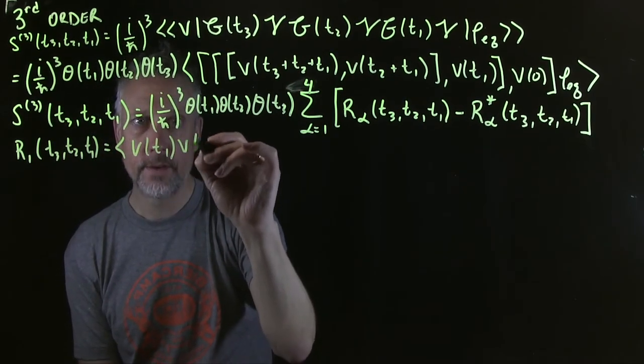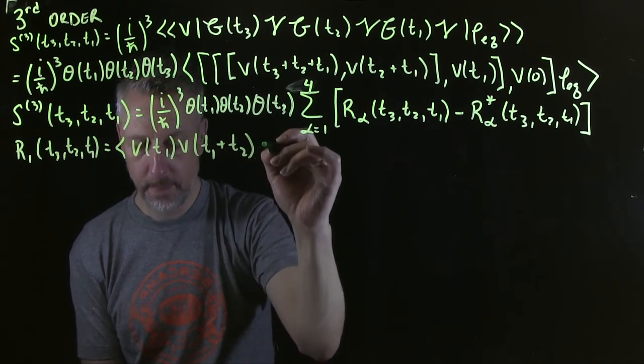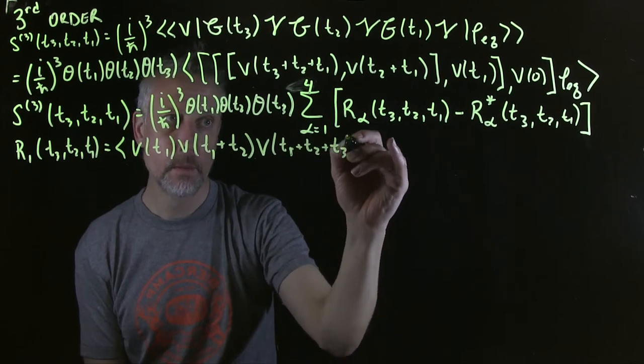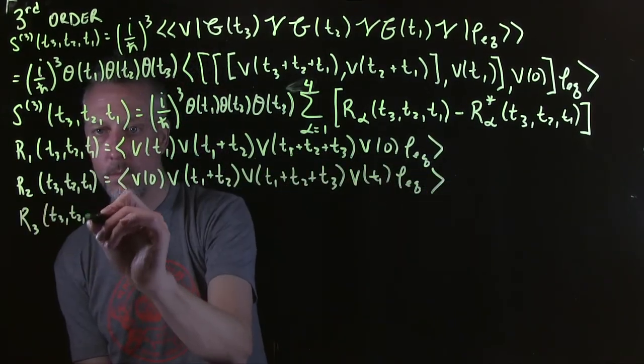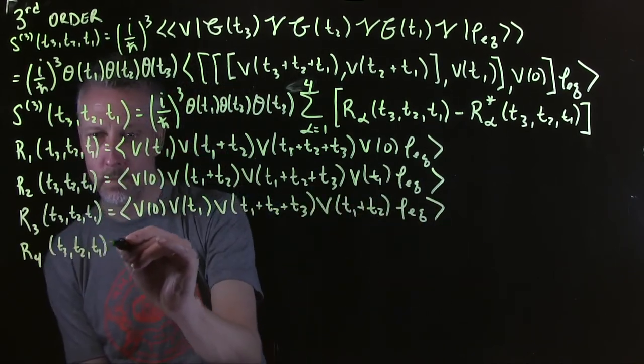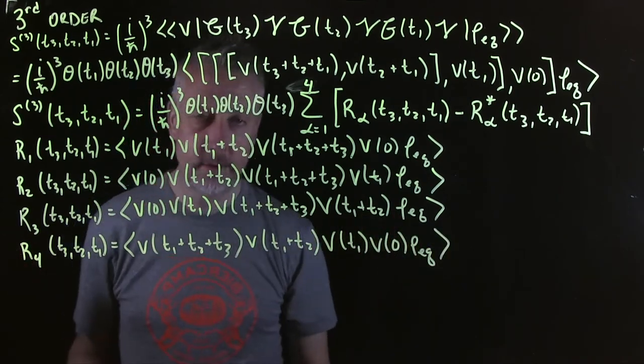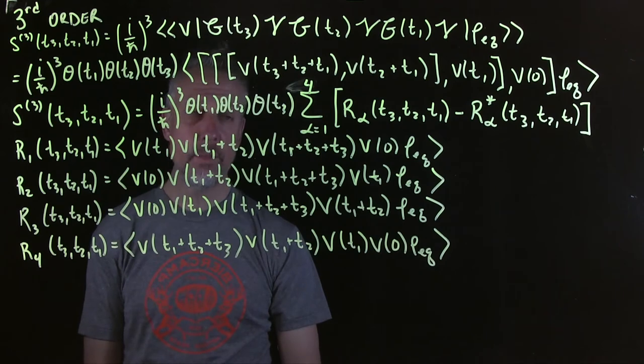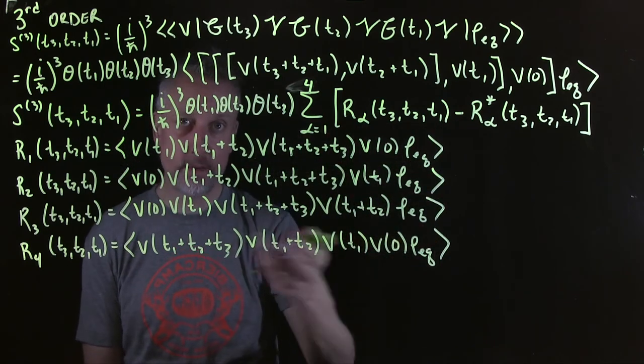I will fast-forward through this, because there's no need to see me write this out slowly. All right, so there you have that. These are all of the different pathways that give rise to the third order response function. Okay, and it's written in the time domain, as you can see here.